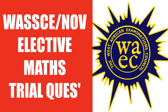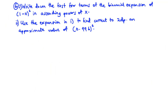For question number six, write down the first four terms of the binomial expansion of (1 minus x) to the exponent 6 in ascending powers of x. Then use the expansion to find, correct to two decimal places, an approximate value of 0.996 raised to the power 6.